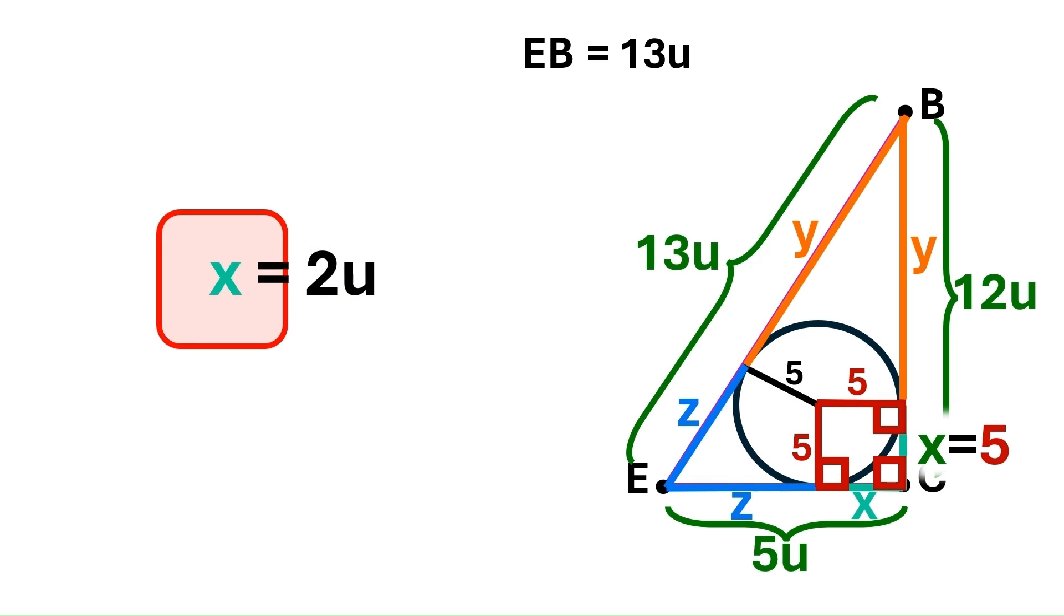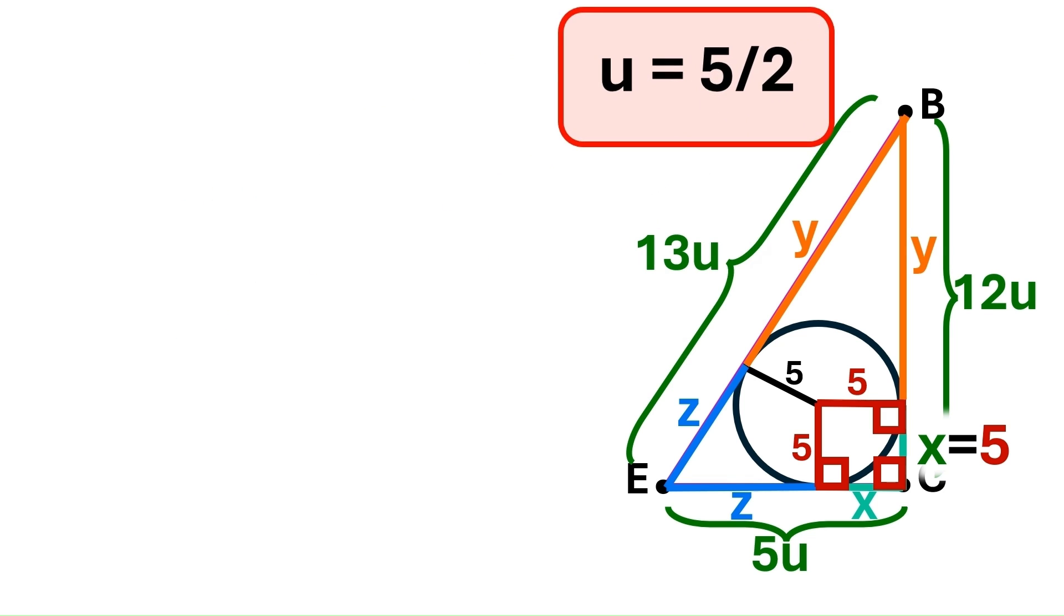And this X must be equal to 5. So let's substitute the X in here with 5. And U turns out to be 5 over 2. Let's keep this super important finding up here.